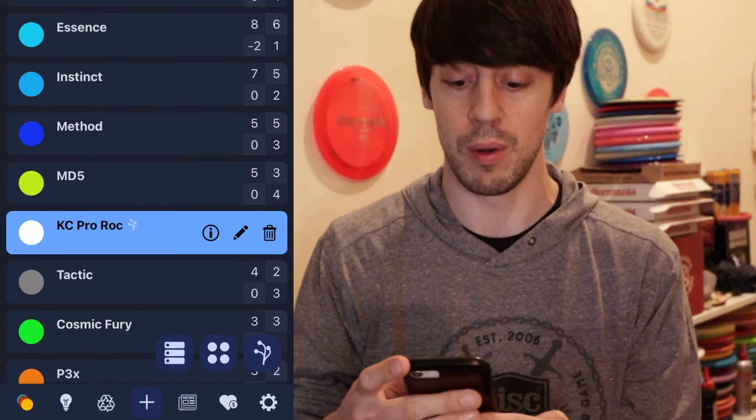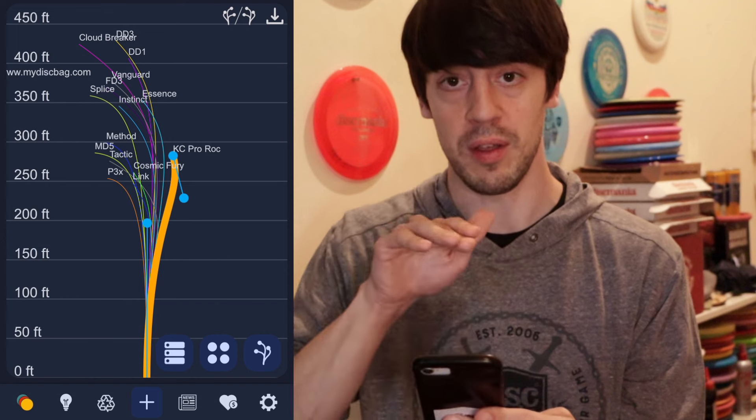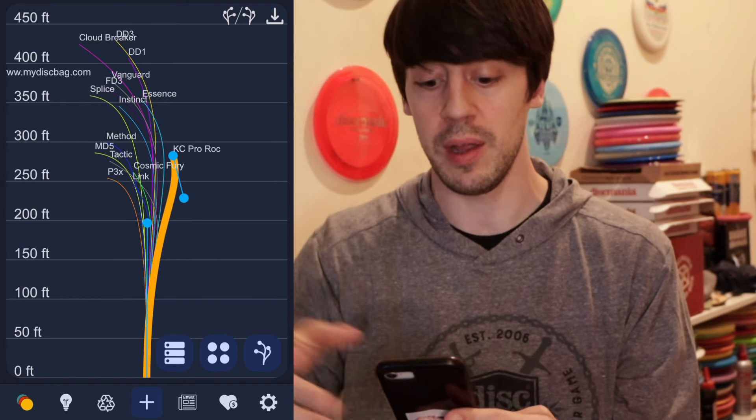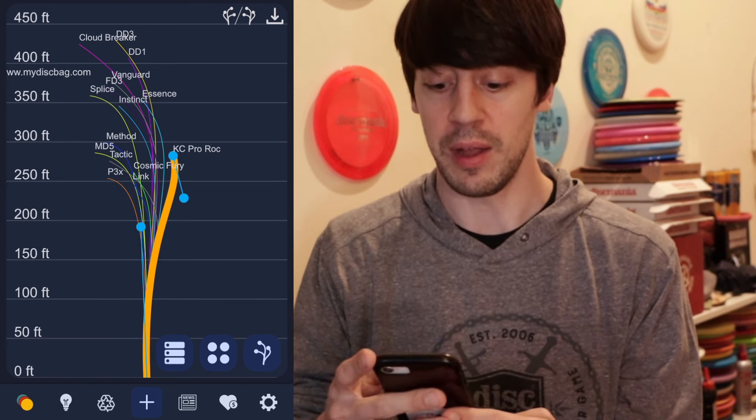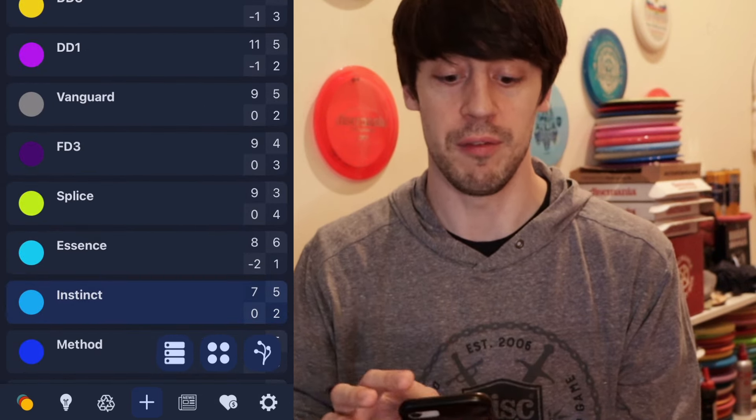So I would say that that is probably a more accurate representation of the flight of my KC Pro Rock. Maybe even more, I might even want to see if I can pull it, yeah like that, because it does kind of flip up and then go to the right. I just think it's really cool that you can go in and adjust the specific flights of all the discs that you have too.